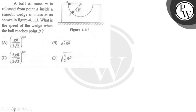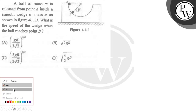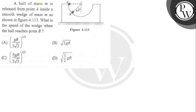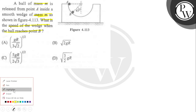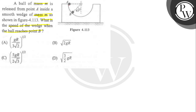A ball of mass M is released from point A inside a smooth wedge of mass m — both masses are equal as shown. What is the speed of the wedge when the ball reaches point B? As the ball goes down, the wedge will move back. Let's say capital V is the velocity of the wedge.